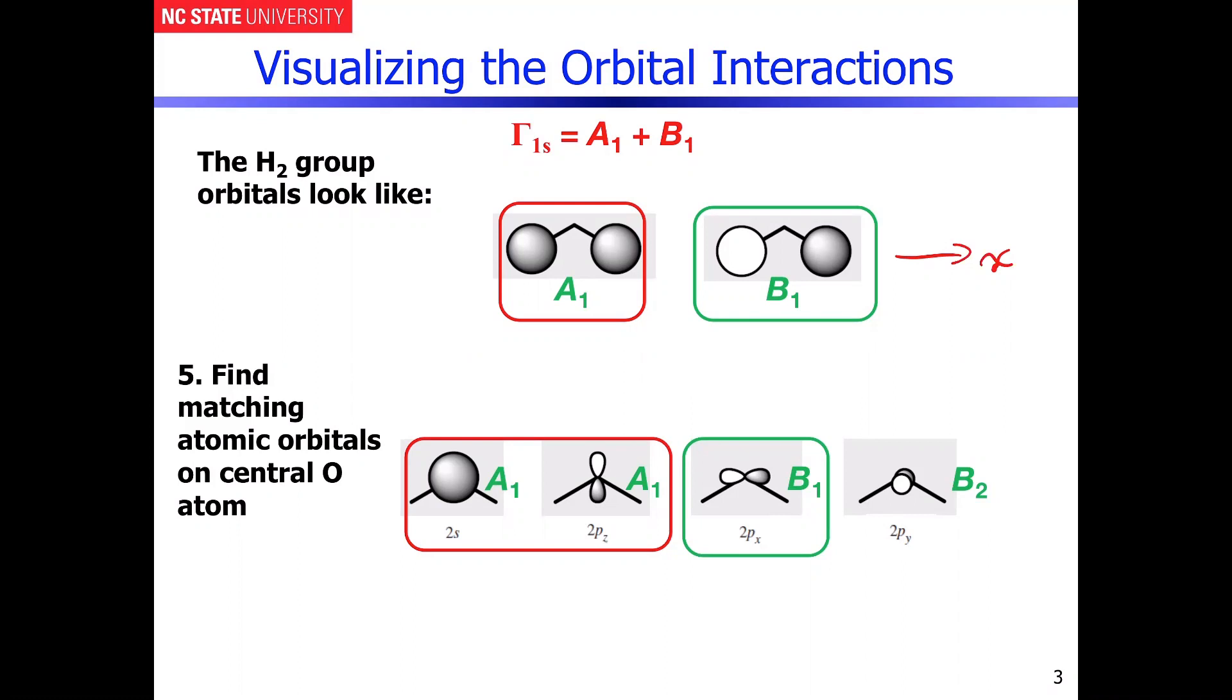But the important facet of this particular case is the fact that because the bonding is directed along the axis, what you wind up with is a situation, and I'll briefly redraw this here. So again, I'm just taking the B1 combination or the B1 hydrogen group orbital.